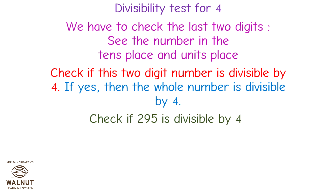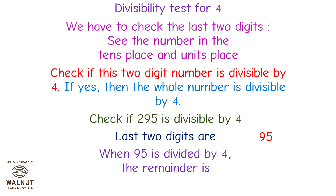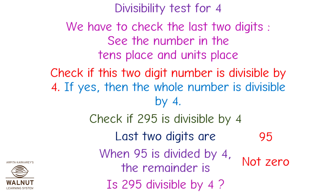Check if 295 is divisible by 4. Last two digits are 95. When 95 is divided by 4, the remainder is not 0. Therefore, 295 is not divisible by 4.